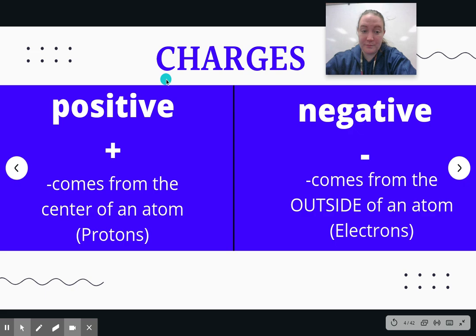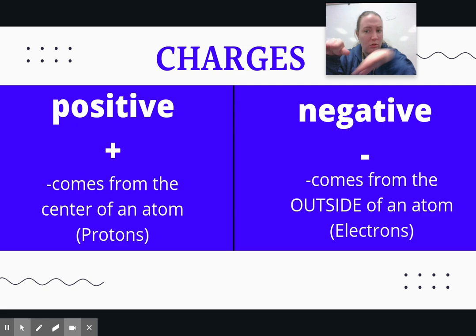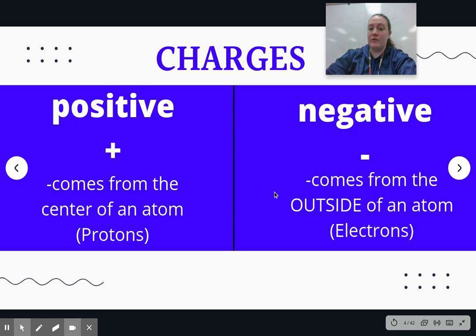The positive, or the pluses, they come from the center of an atom — the protons. If you look at an atom in the center, and this may go back all the way to middle school, you have the neutrons and the protons, all in this little nucleus in the center. Those neutrons have no charge — they're neutral. Your positive protons make that inner part positive. Then around the outside of where there's that nucleus is your negative charge. This comes from the outside of the atom, and these are your electrons. So protons are positive, electrons are negative.